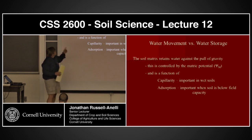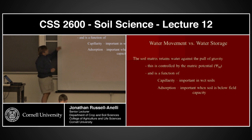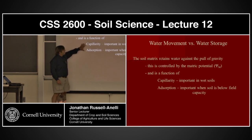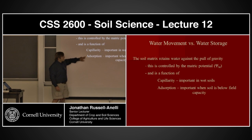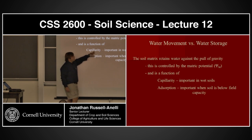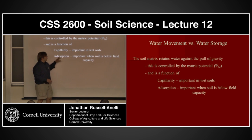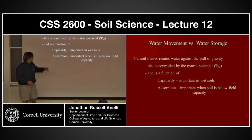The soil matrix basically holds that water against the pull of gravity. This is controlled by the matrix potential and is a function of capillarity and absorption. Capillarity is important in wet soils. Absorption is important when the soils become below field capacity.